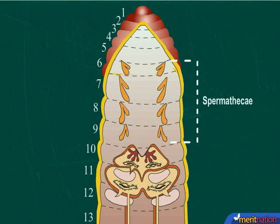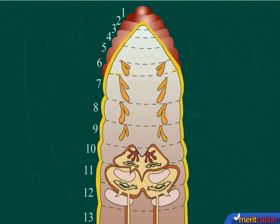The spermathecae are present in four pairs, that is in segments 6th to 9th.